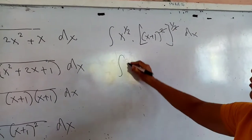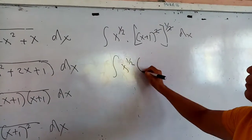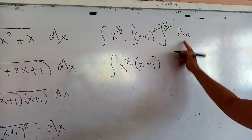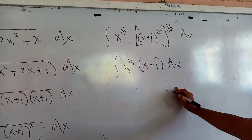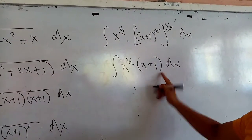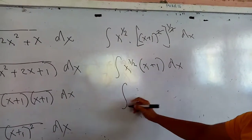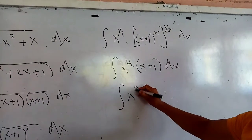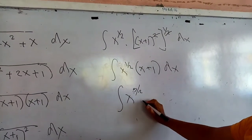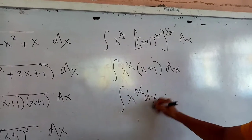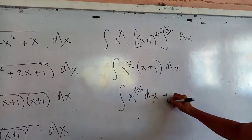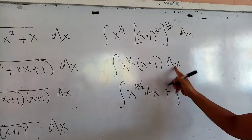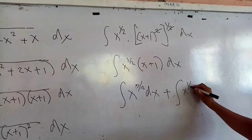So that will be still the integral of x to the one-half, then multiplied by (x plus 1), times dx. Multiplying the polynomial by the binomial, that would be x — one-half plus 1 will be raised to the three-halves — then multiplied by dx, plus the integral of x to the one-half times 1 times dx, which is x to the one-half multiplied by the differential dx.